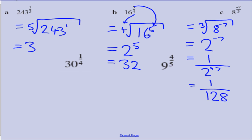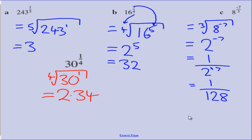Last example: 30 to the power of a quarter. The 4 becomes the power of the root sign, and the 1 doesn't change anything, so we're looking for what number multiplied by itself 4 times gives 30. This isn't exact — you may need a calculator. Roughly it is 2.34. To summarize: a fractional index means it's easier to use it as a surd. The denominator is the power of the root sign and the numerator is the power of the number under that root sign. Thank you for watching and good luck.